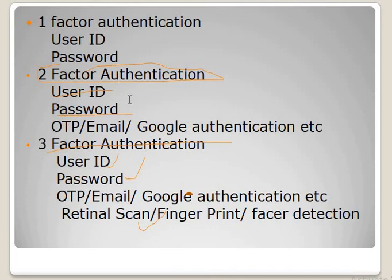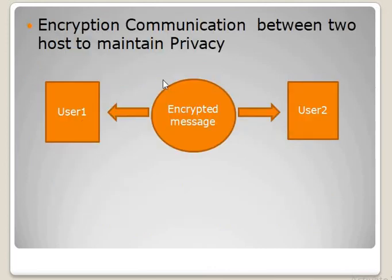These are the basic types of network security used for securing our network, but these are mainly for the access part — where we are entering our network. If we are talking about the communication part of networking, where we are sending data packets across the network, we use a security technique known as encryption. We encrypt our message and then send it to another user.